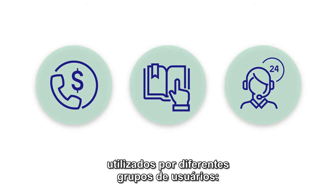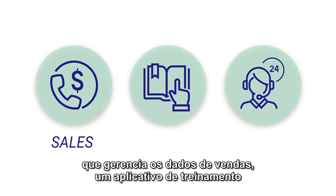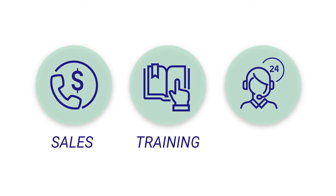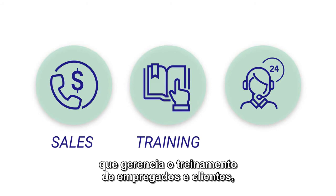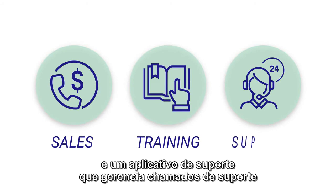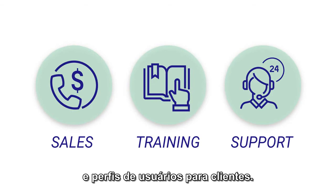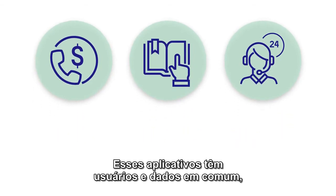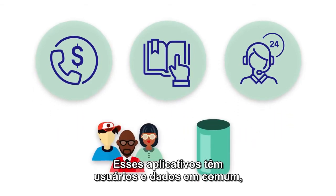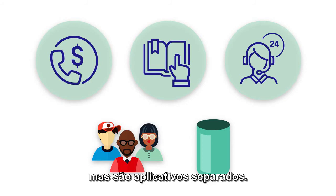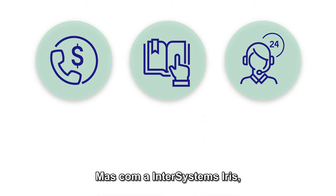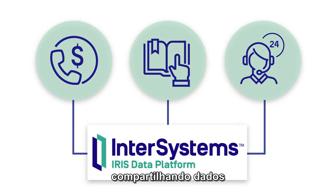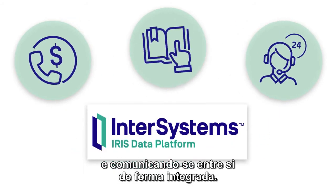For instance, consider you have three different applications used by different user groups: a sales application that manages data for sales leads, a training application that manages training for both employees and clients, and a support application that manages support tickets and user profiles for clients. These applications have common users and common data, but they are separate applications. With InterSystems IRIS, though, they can be fully interoperable, sharing data and communicating with each other seamlessly.